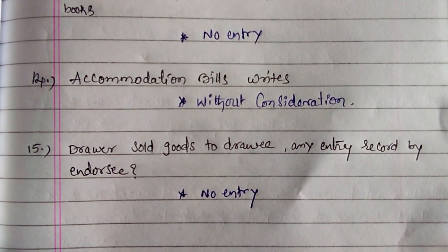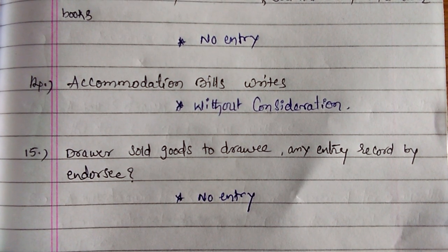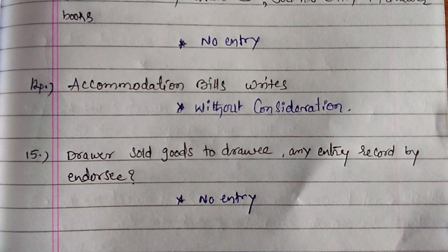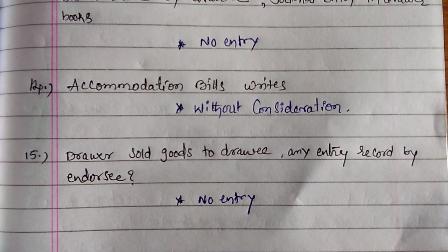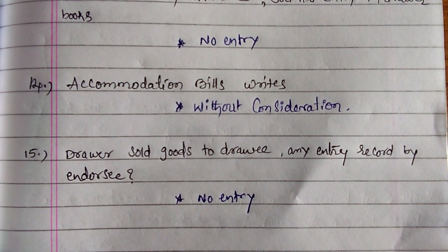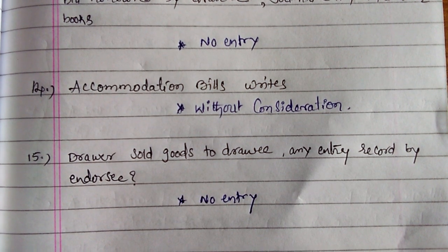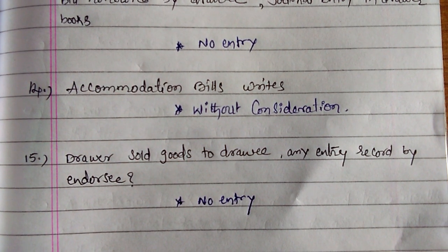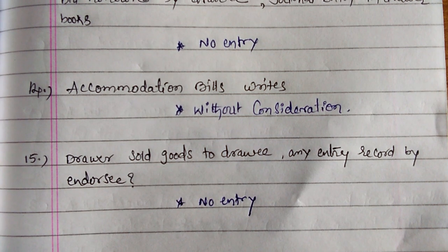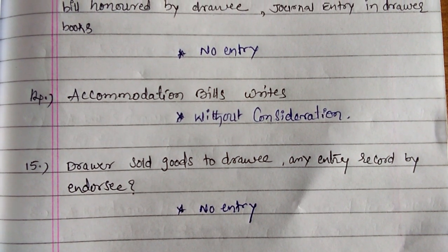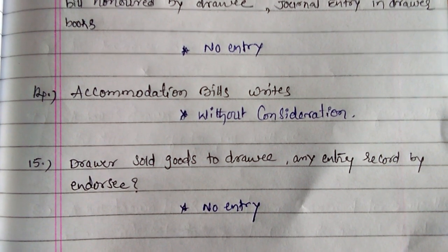Finally: the drawer sold goods to the drawee — any entry recorded by NRC? No entry recorded by NRC. Why? Because NRC will collect cash from the drawee only, so the drawee never makes an entry in this situation.